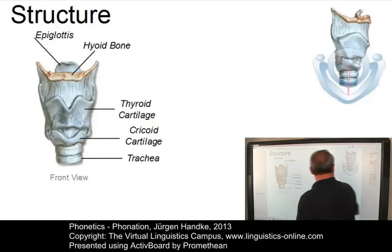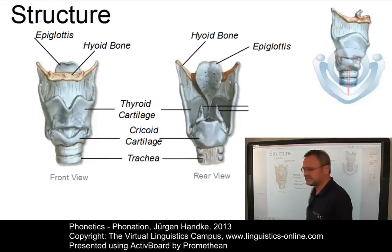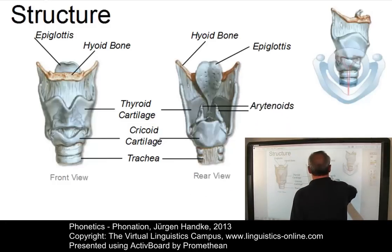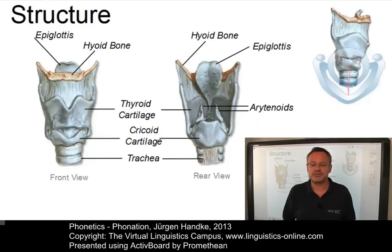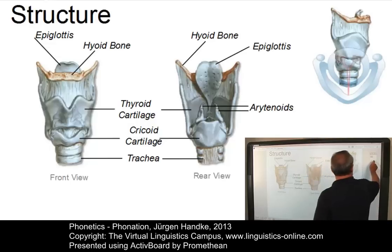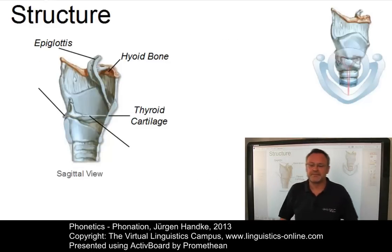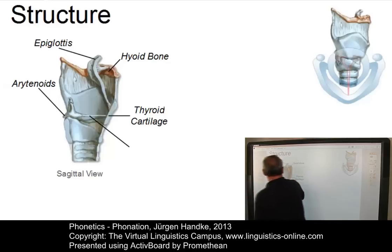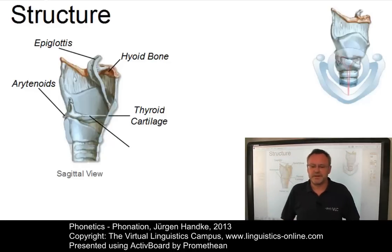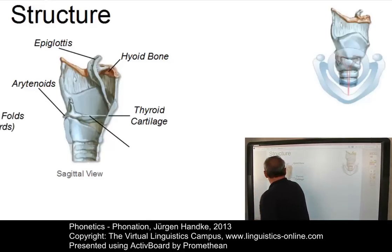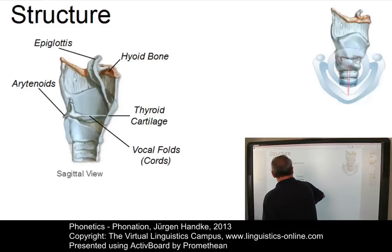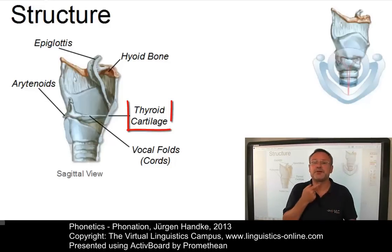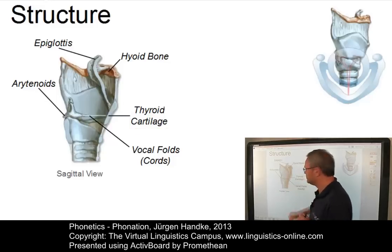If we turn round the larynx and use the rear view, we can additionally see the arytenoids, the cartilages to which the vocal folds are attached. The sagittal view nicely exhibits the position of the arytenoid cartilages, which you can see here on the left, and part of the vocal folds or vocal cords over here. The vocal folds are attached at the front to the thyroid cartilage, and at the back to the arytenoids.